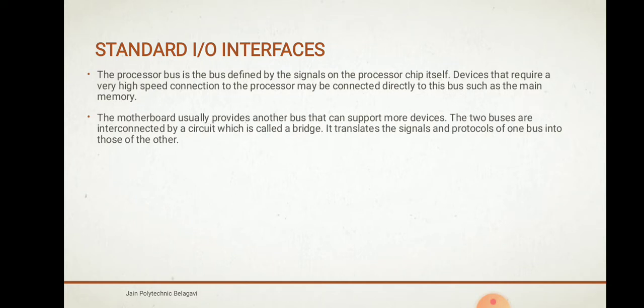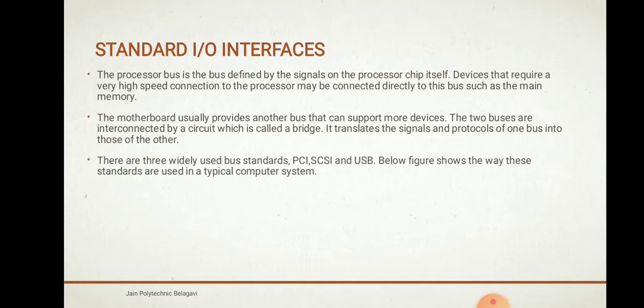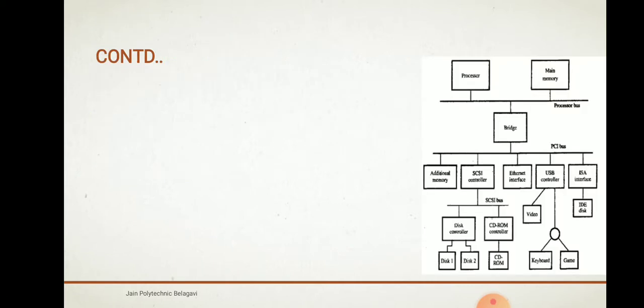The motherboard usually provides another bus that can support more devices. The two buses are integrated by a circuit called a bridge, which translates the signals and protocols of one bus into those of the other. There are three widely used bus standards: PCI, SCSI, and USB. The figure below shows the way these standards are used in a typical computer system.